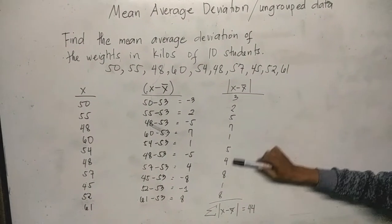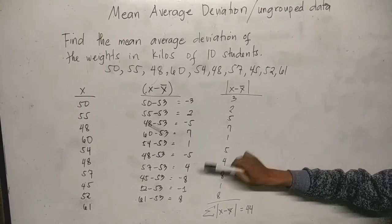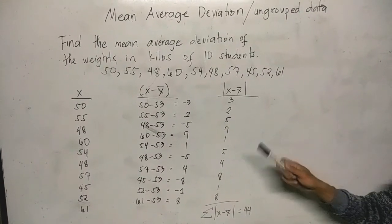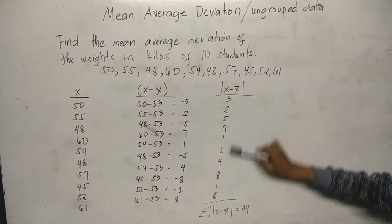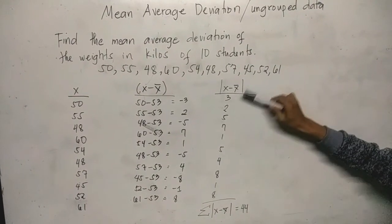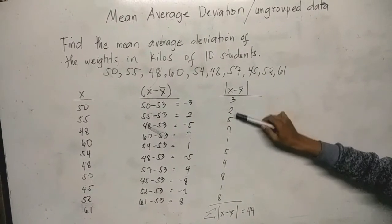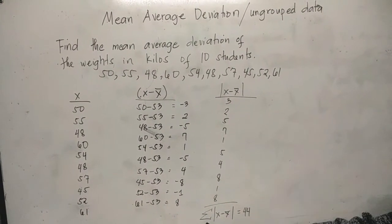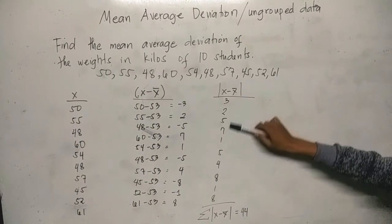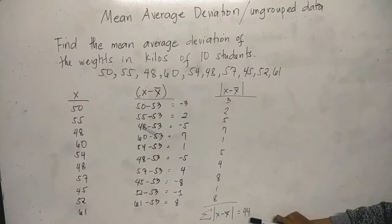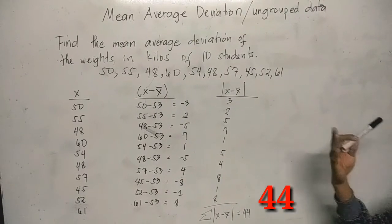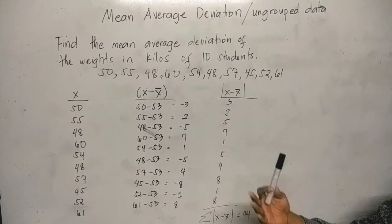Since we have here the absolute values of the difference between the individual score or weights in kilos of students and the x bar or the mean, we need to get the summation of the absolute x minus x bar. This means we add them all. The summation of absolute x minus x bar equals 44. If we add all of these, we get 44.